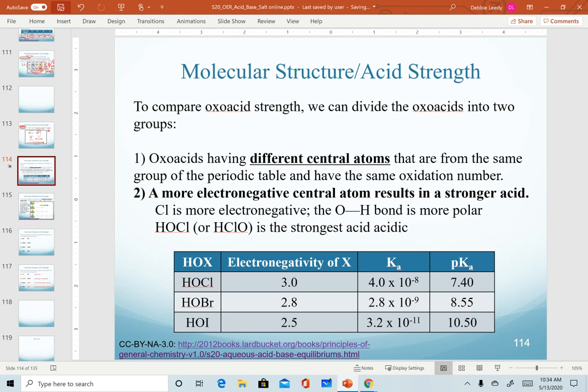The two trends that we're going to look at here: the first one is where we change the central atom but have the same number of oxygens on them. For example, if we compare hypochlorous, hypobromous, and hypoiodous acids, all we're doing is changing the central atom.